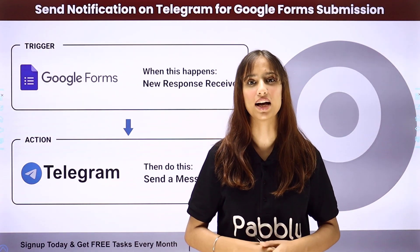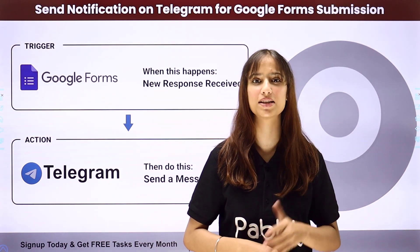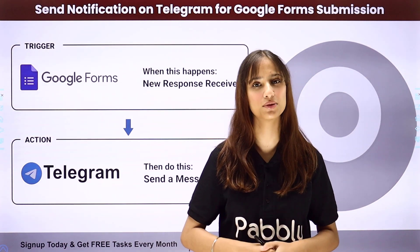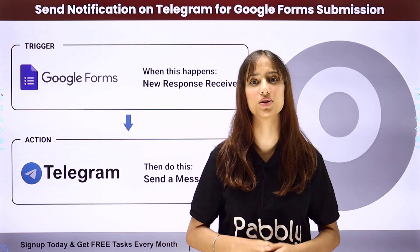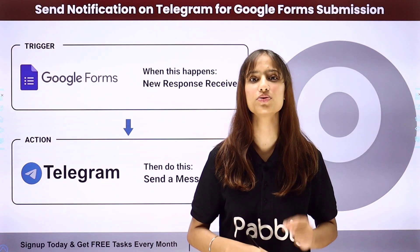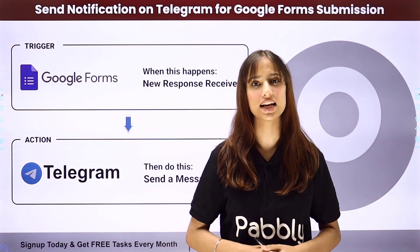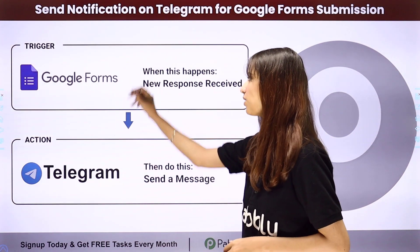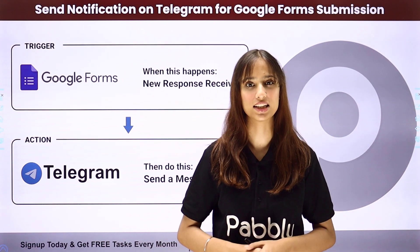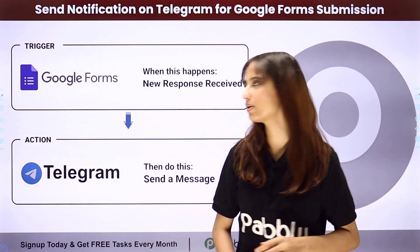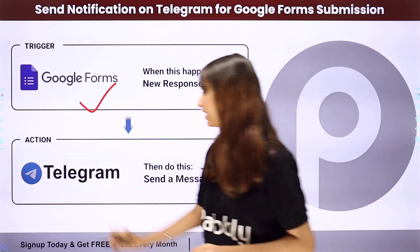Let's assume that I am a human resource manager and I conduct an employee survey every month by circulating a Google Form. My objective is that whenever I receive a new response, I want to send a notification on Telegram to my team members. To do this I need to build an integration between these two applications using Pably Connect. My trigger application will be Google Forms and my action application will be Telegram.